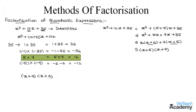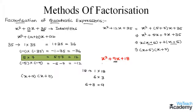Now let us try another example. We have the quadratic expression x² + 9x + 18, where the constant term is 18. The factors of 18 include 1 × 18 and 6 × 3. Observe that 6 + 3 = 9, which is the coefficient of the middle term x. So we can write this expression in the form x² + (a + b)x + ab as x² + (6 + 3)x + 18.